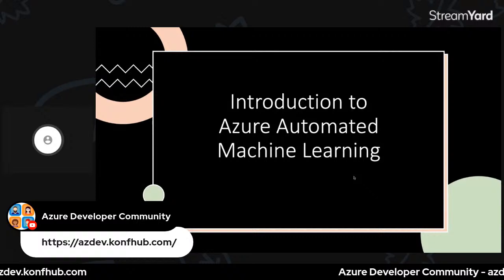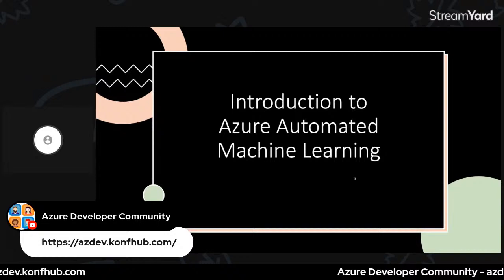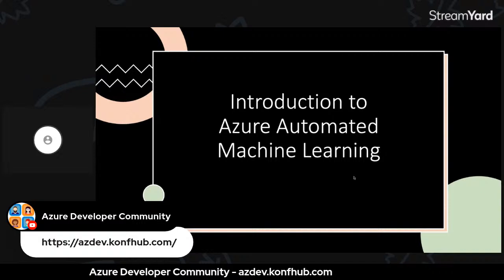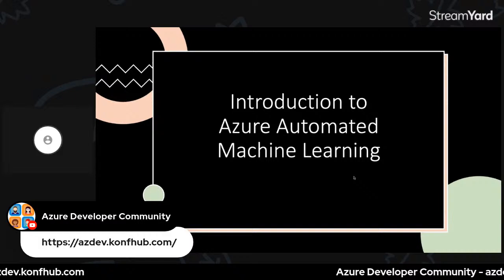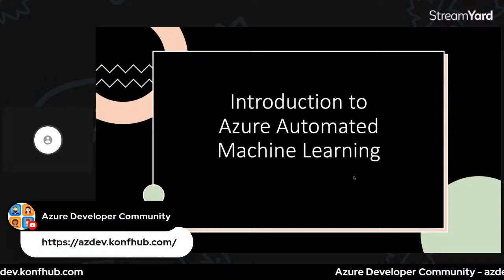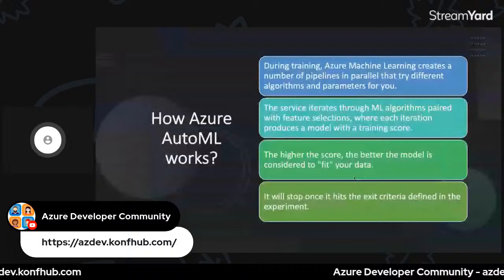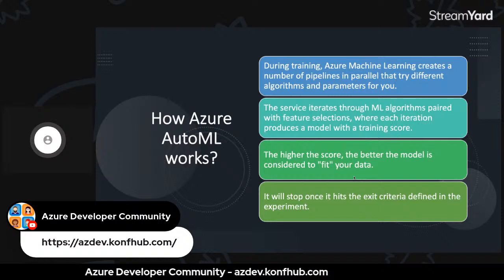When should you NOT use AutoML? If you need a very accurate, precision-critical model and want to invest deeply in domain knowledge, it's better to do machine learning practices yourself. AutoML gives decent accuracy in less time, but may not give the absolute best results. Think of it like ready-made versus tailor-made clothes — AutoML is ready-made, good enough for most, but not a perfect fit for every specialized need.